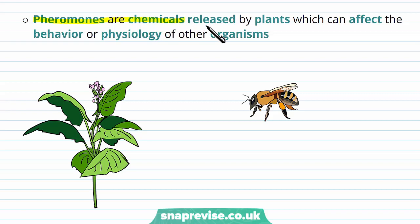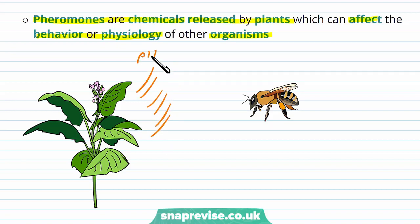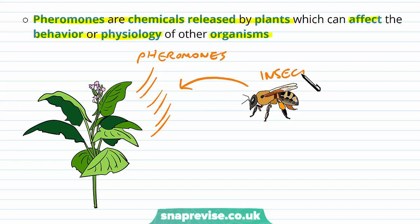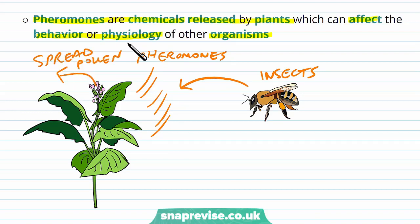Pheromones are another type of chemical released from plants which can affect the behaviour or physiology of other organisms. For example, some pheromones are released into the atmosphere and can attract bees or other insects to land on the plant and spread pollen, helping in sexual reproduction. So plants can emit a variety of chemicals to repel certain animals or attract others if it's advantageous to the plant.